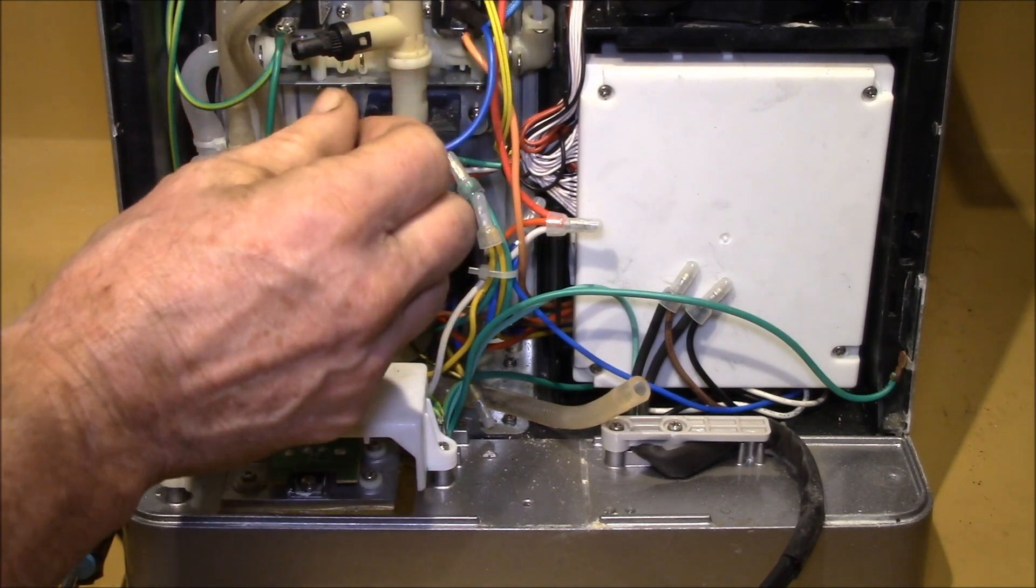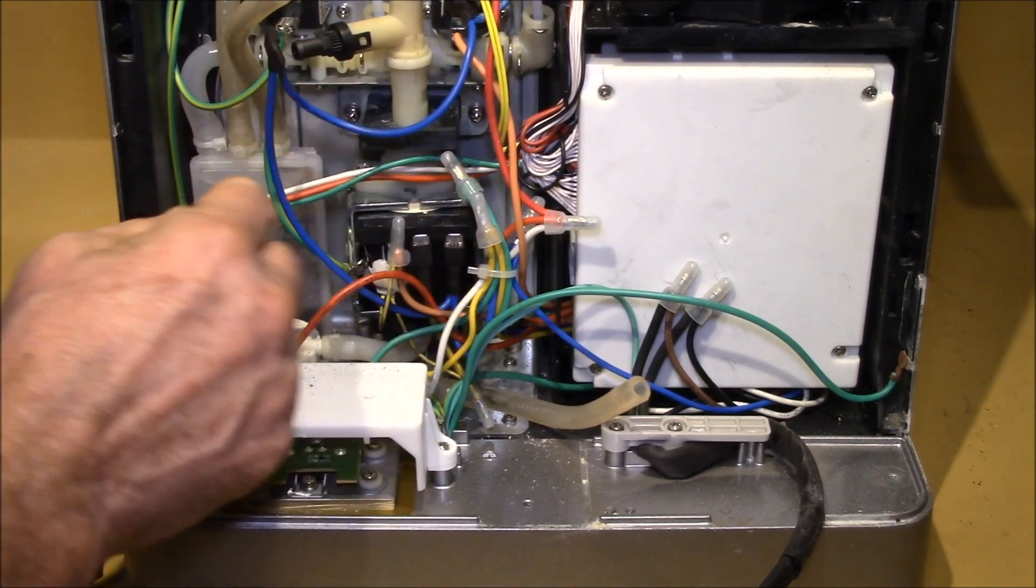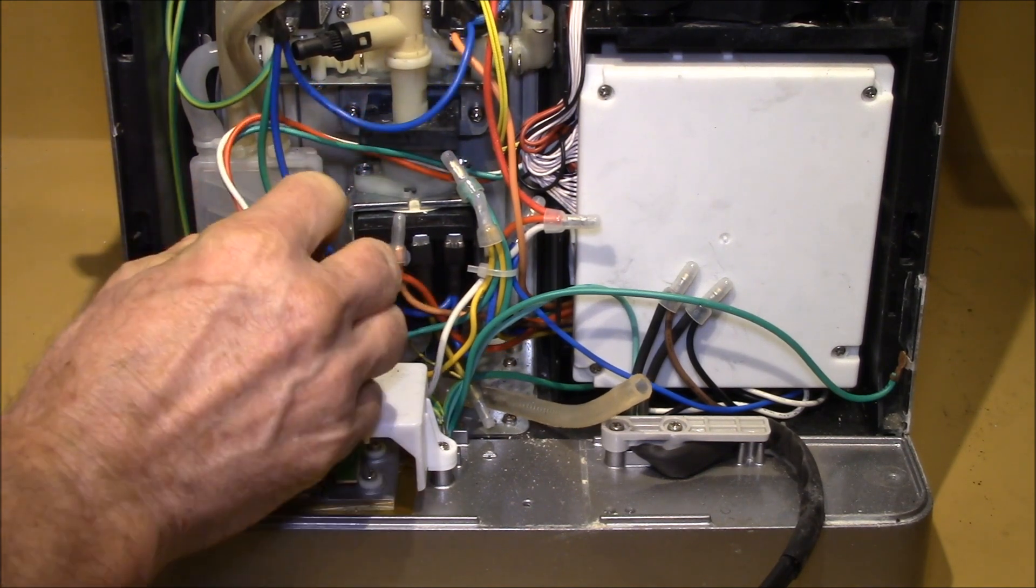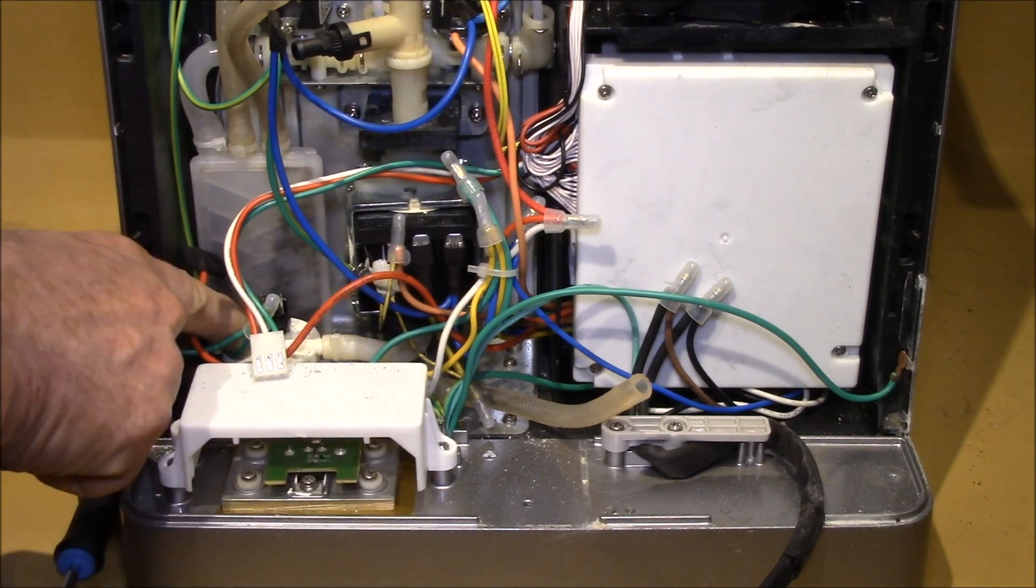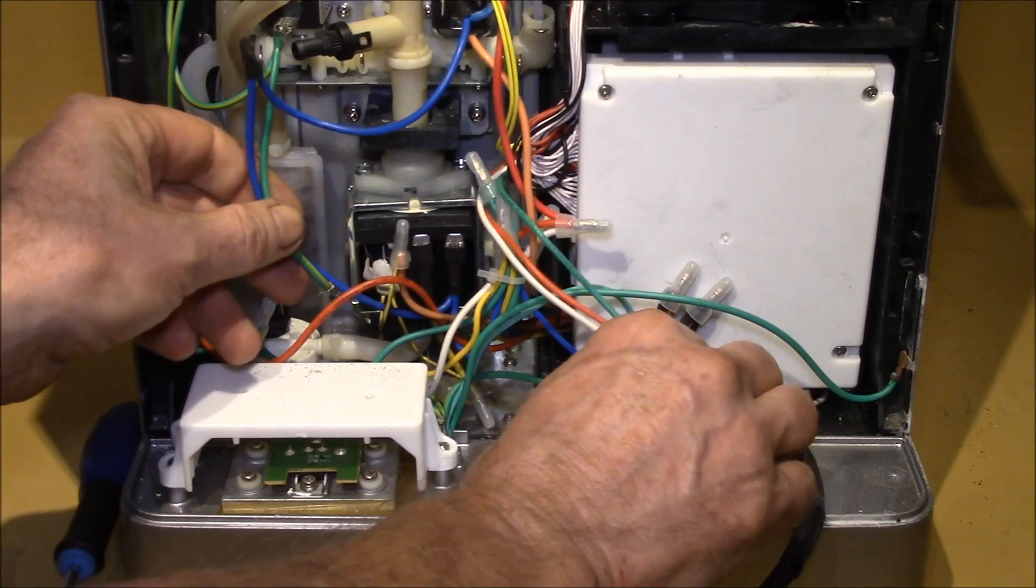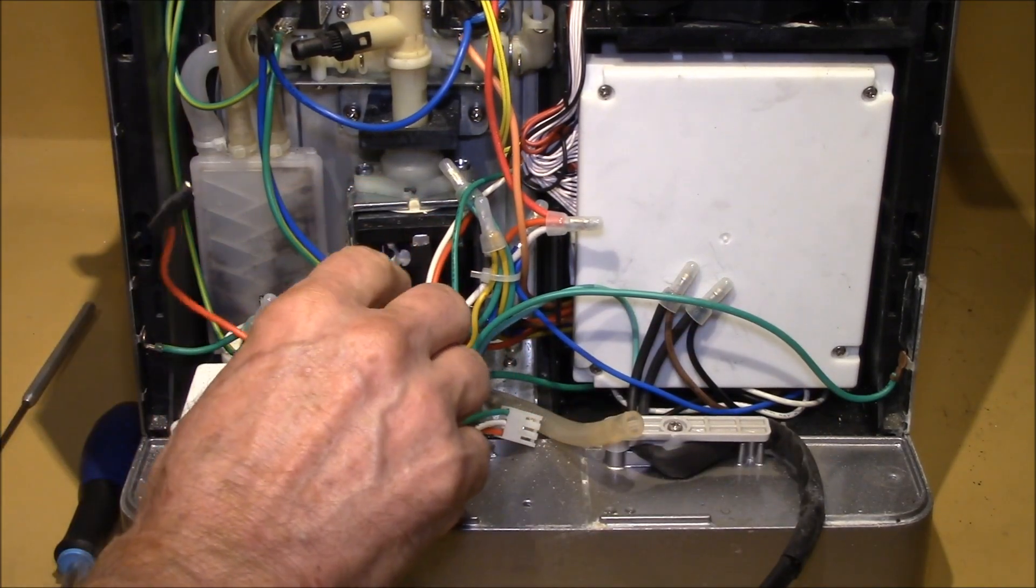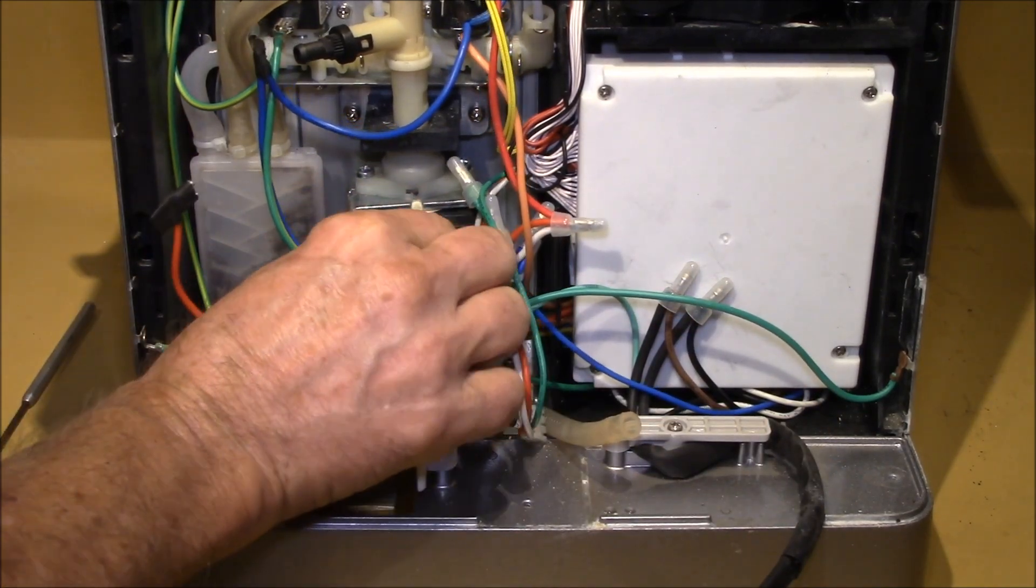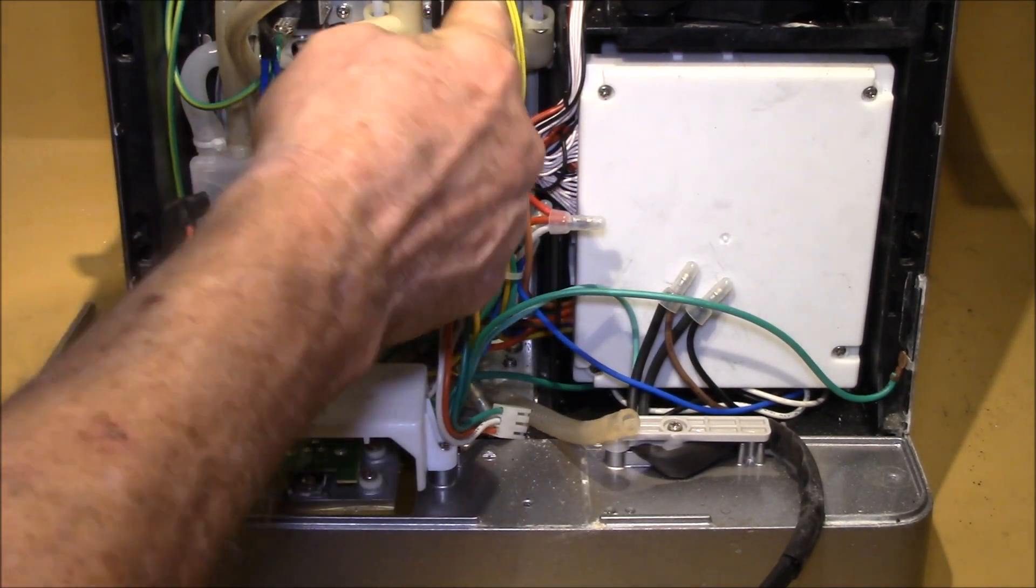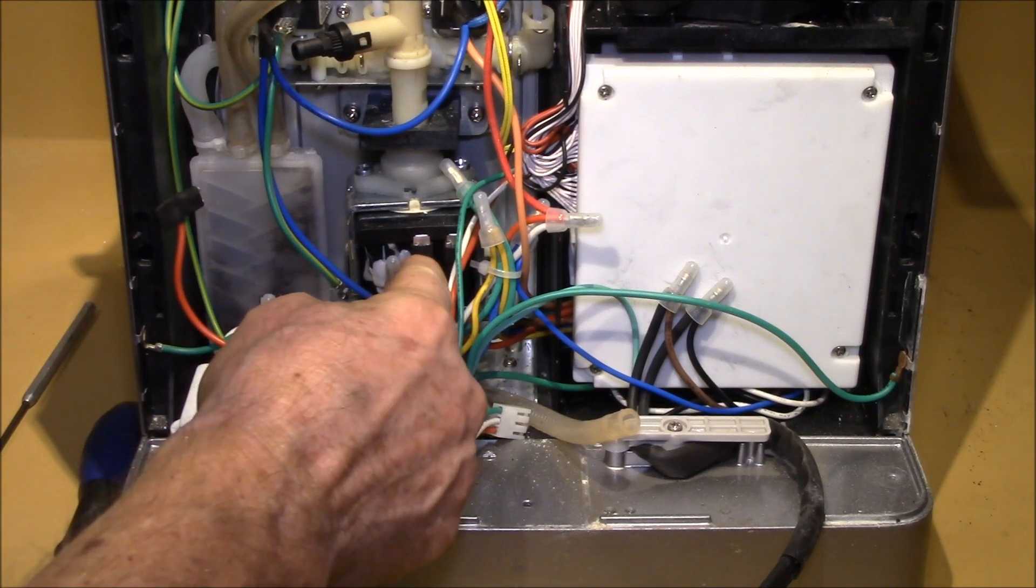I've also unplugged the wires from the solenoids here. The other one to take off is this plug right here. So this is for the flow sensor down here. You need to move this wire out of the way. And then there's a couple of wires down here. So there's the pump and the solenoids are wired the same. You've got neutral and hot. There's neutral, hot.